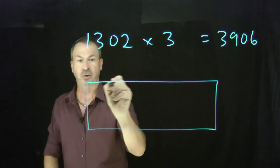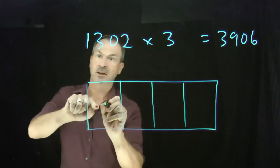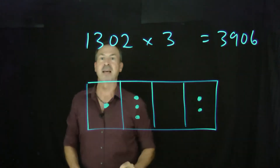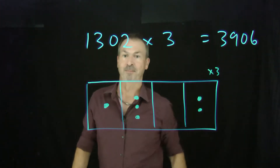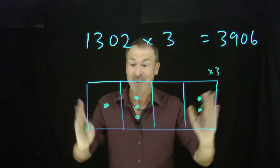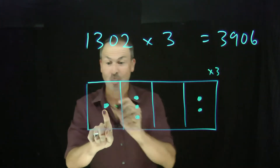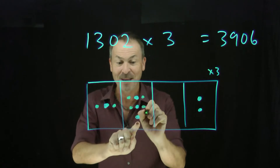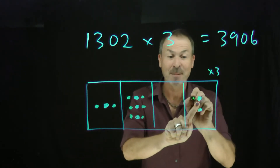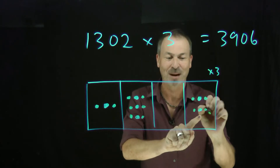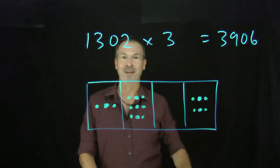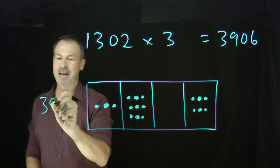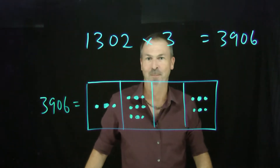Let's start with the number 1302. I'll draw a little place value diagram for it. It's going to be 1 thousand, 3 hundreds, no tens, and 2 ones. There it is — there's 1302. And I'm being asked to triple it. I'm going to literally triple everything I see in that picture. Each dot gets tripled and becomes 3 dots. Everything got tripled, and now I really do see the answer 3906. There's the answer 3906 to the multiplication problem.